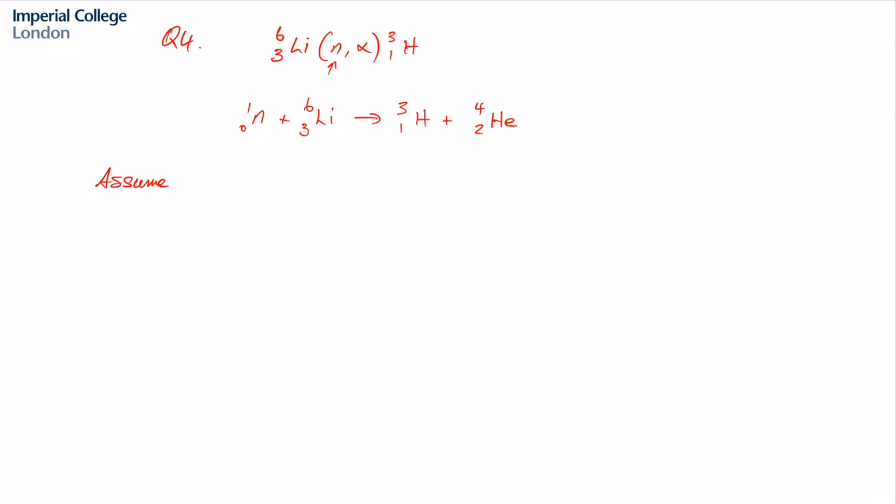And so we can do the same type of assumption, and we assume that our alpha particle that's emitted has approximately 0 energy. And so then we just calculate the energy release. This is equal to the reactants, the mass of the reactants minus the mass of the products, multiplied by our conversion factor that we used previously which was 931.49 mega electron volts per atomic mass unit.